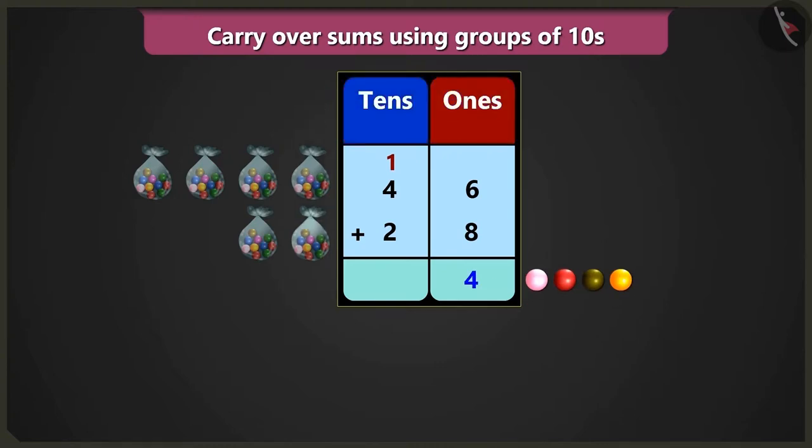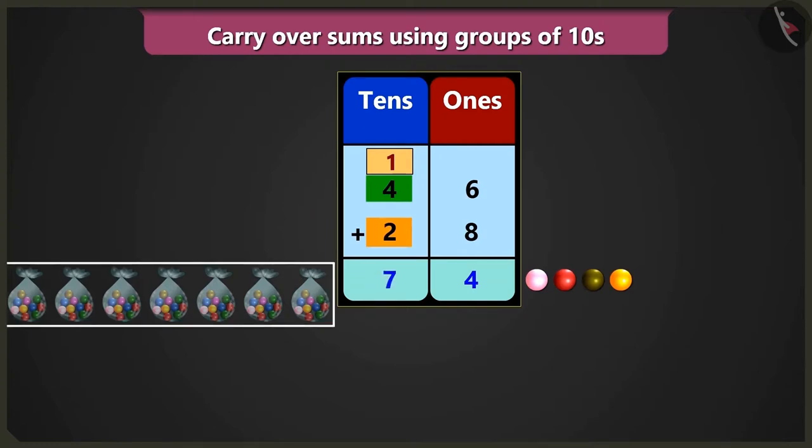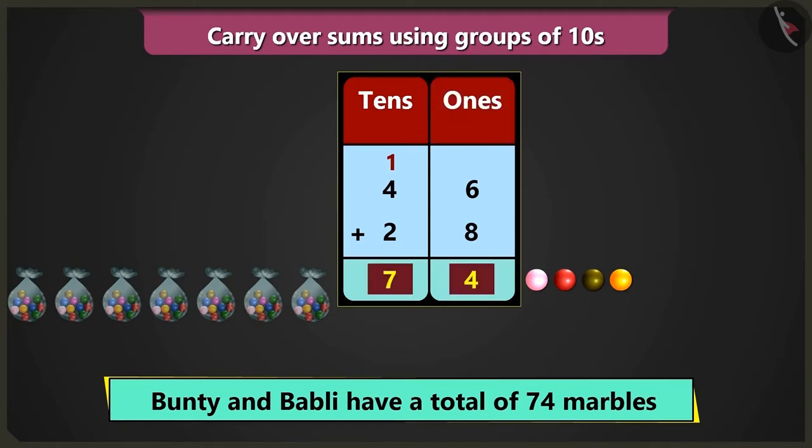Now in the box of 10s, adding 1 tens and 4 tens, we get 5 tens. And adding 5 tens and 2 tens will be 7 tens, that is 70. So now we have a total of 7 tens and 4 ones, that is 74 marbles.